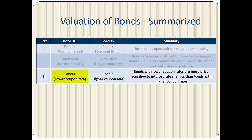In Part 3, we compared bond J that had a lower coupon rate to bond K that had a higher coupon rate, and discovered that bonds with lower coupon rates are more price sensitive to interest rate changes than bonds with higher coupon rates.